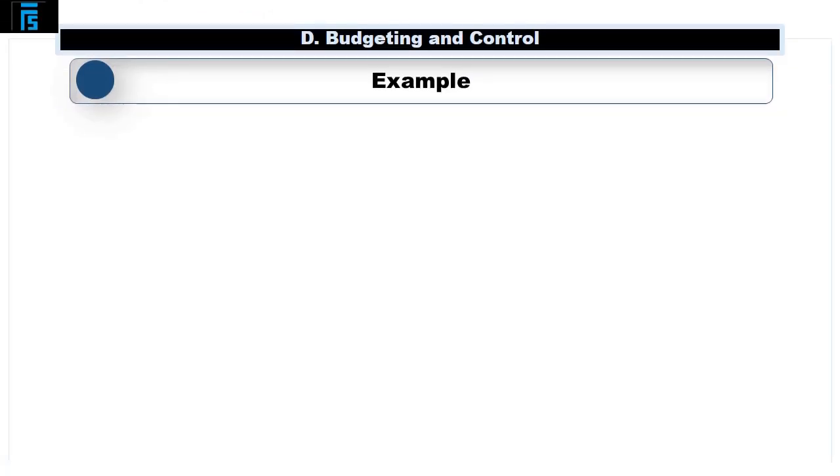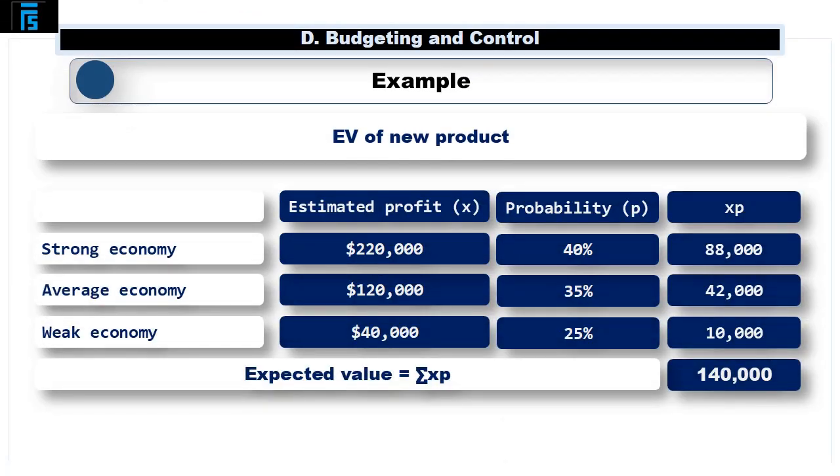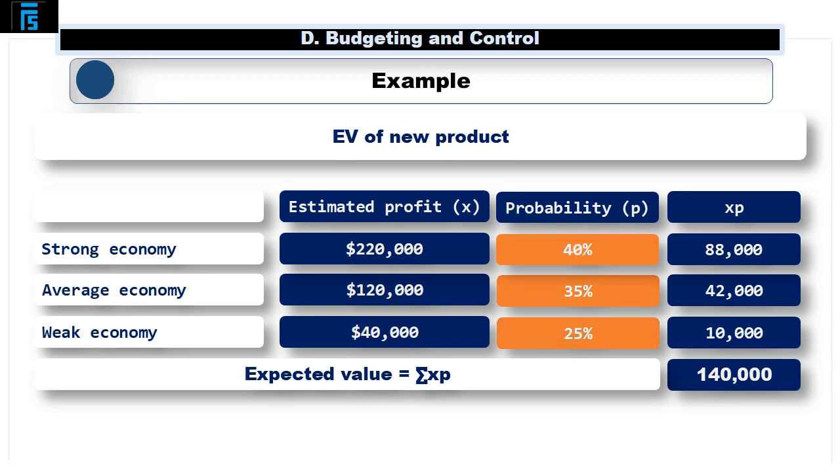Let's consider an example. A company is considering launching a new product. The expected state of the local economy has been categorized as either strong, average, or weak. Based on this, the company has identified three possible profit projections for the next year and the related expected probabilities. There is a 40% chance of a strong economy, a 35% chance of an average economy, and a 25% chance of a weak economy. This would result in respective profits for the next year of 220,000, 120,000, and 40,000.